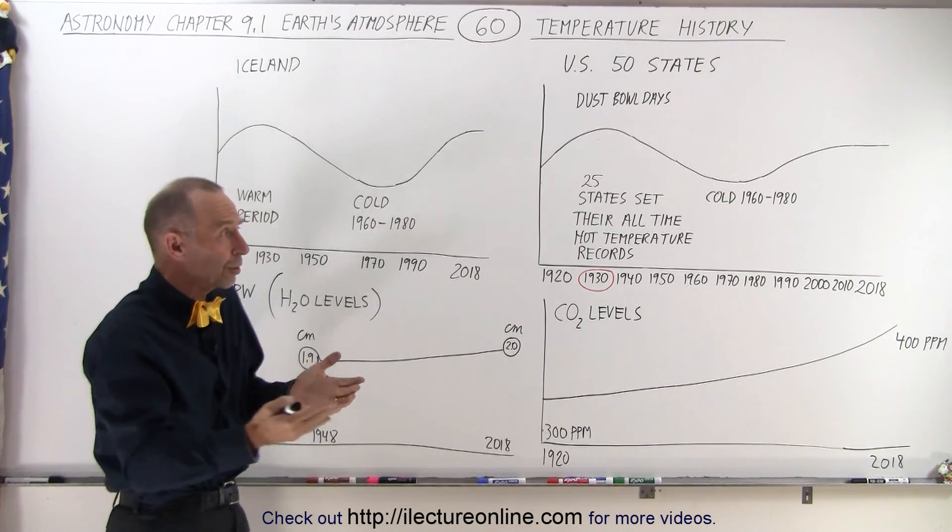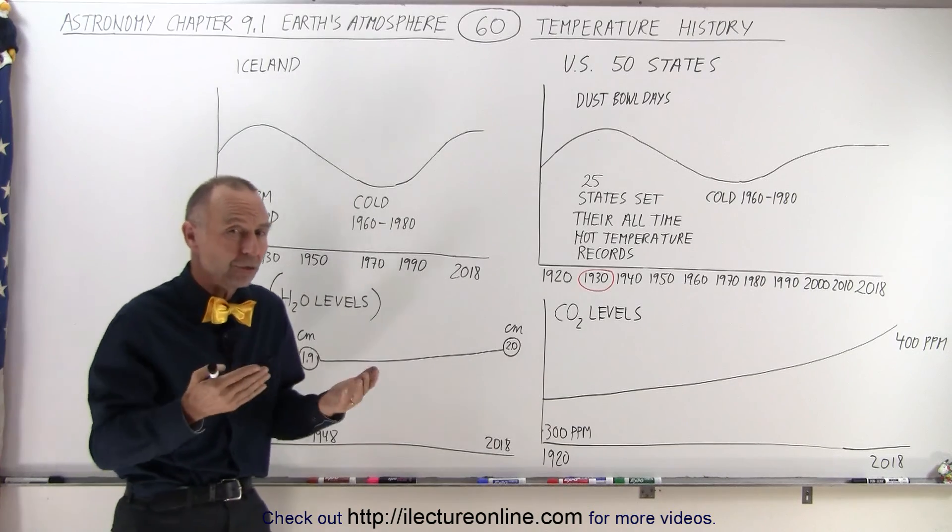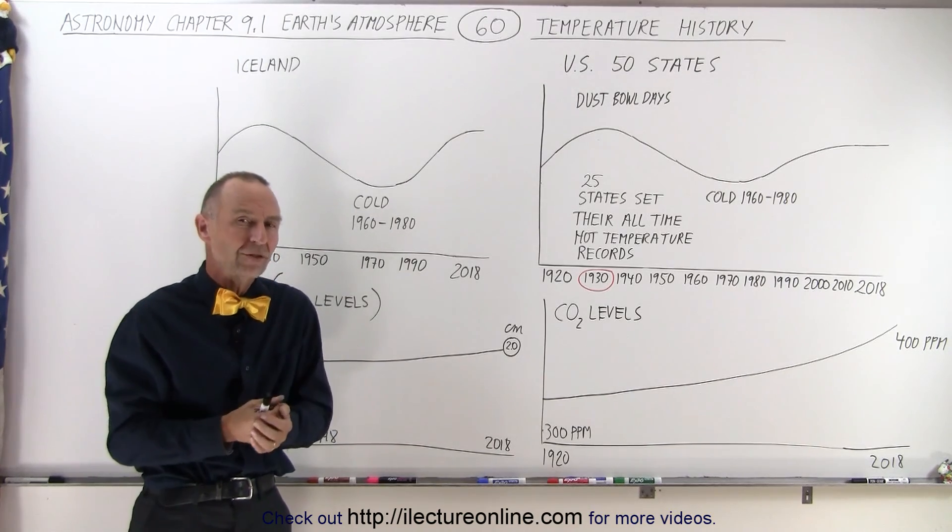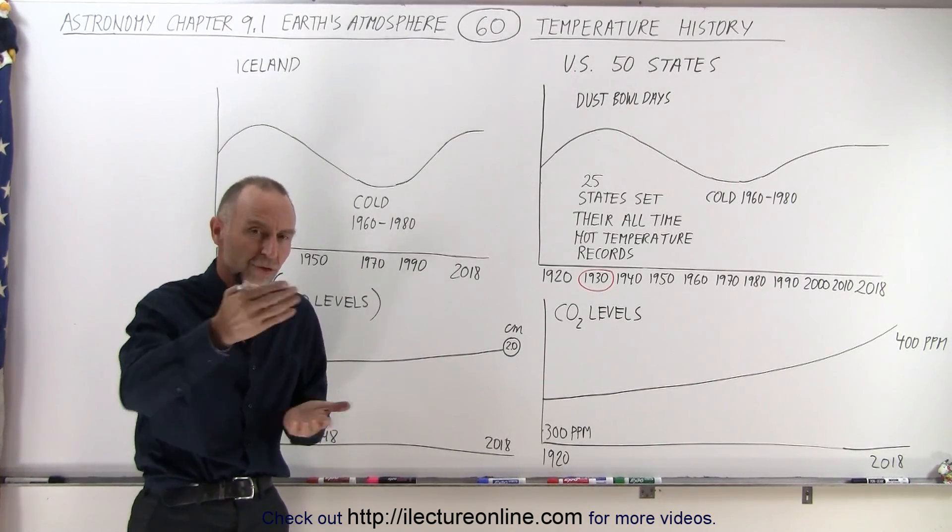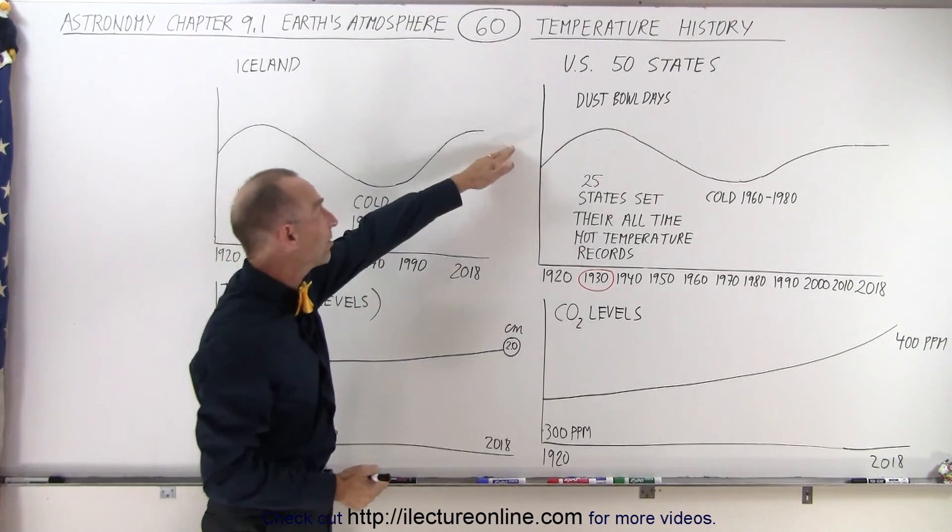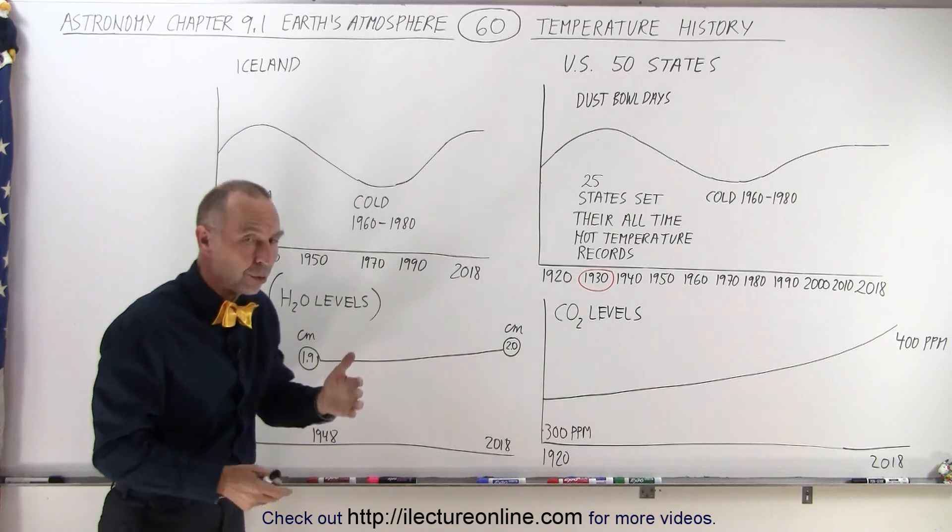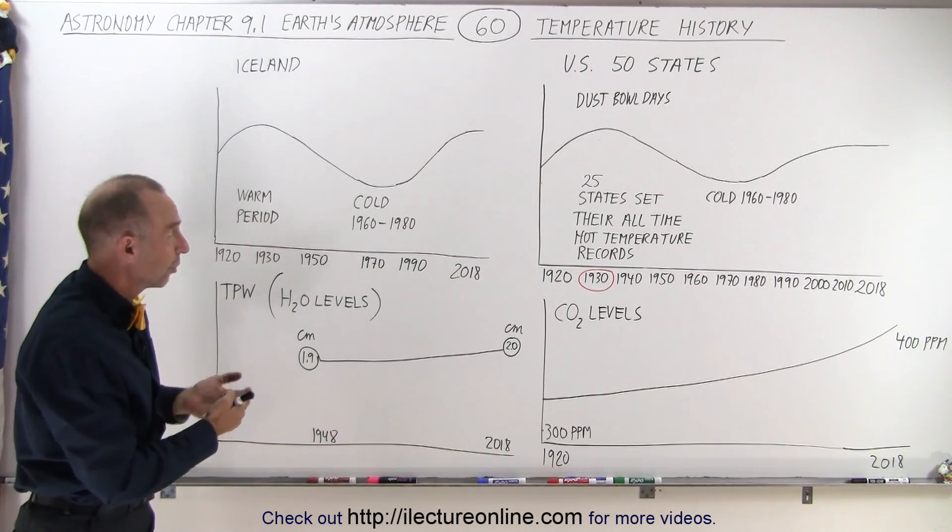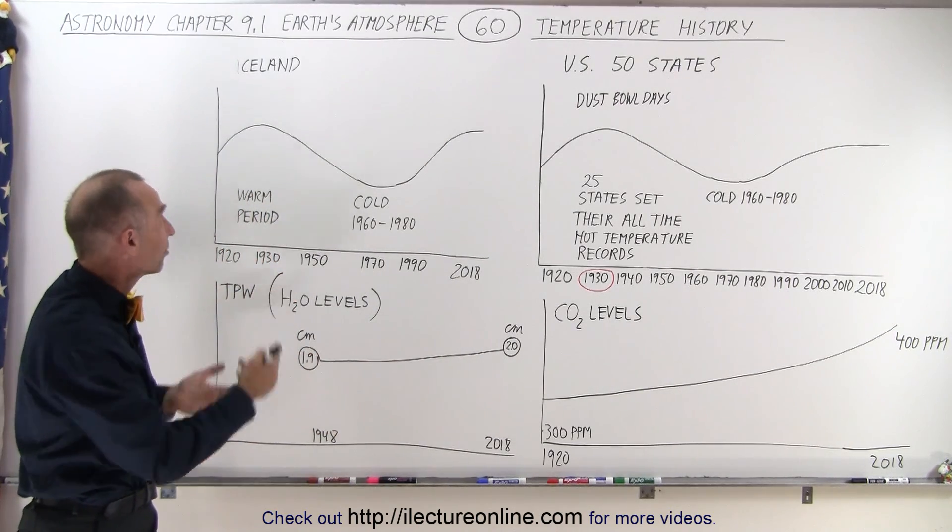So what we should do now is look back in history. Some countries have very good data records from their weather stations, and those two countries are the United States and Iceland. The temperature records of the US and Iceland are really prime compared to many other countries.